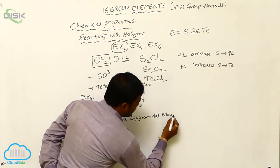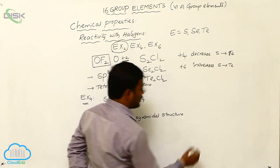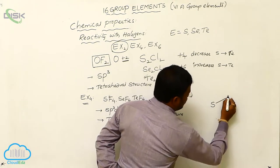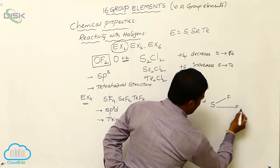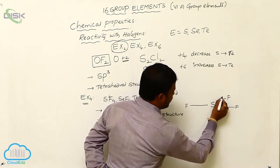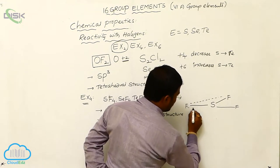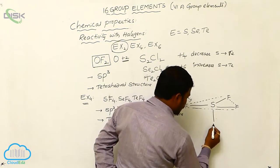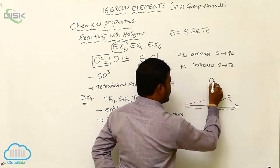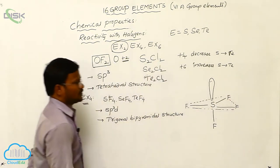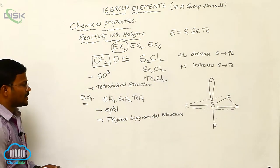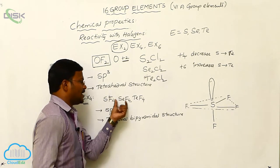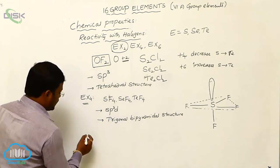In this trigonal bipyramidal geometry, due to SP3D hybridization, three fluorines are arranged in a trigonal manner with sulfur, while on one side one fluorine is present and on the other side one non-bonding pair of electrons is present. This is the expected trigonal bipyramidal structure exhibited by SF4, SeF4, and TeF4.